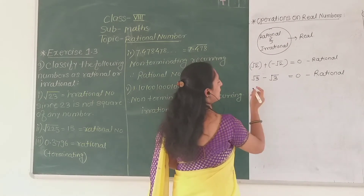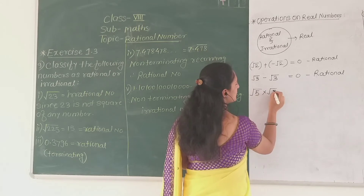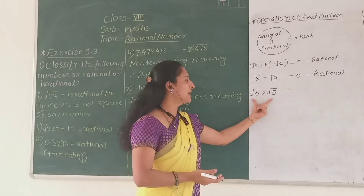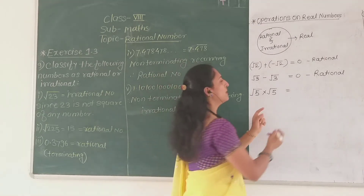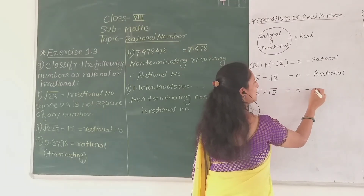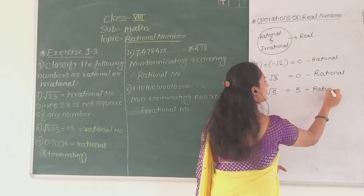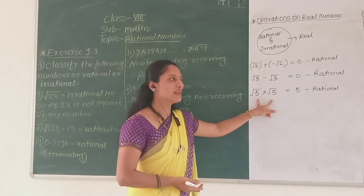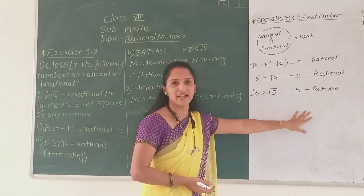Now if I multiply — root 5 into root 5. Square root of 5 is an irrational number. But root 5 into root 5 equals 5. Is 5 an irrational number? No — 5 is a rational number. That means multiplication of irrational numbers is not always an irrational number.